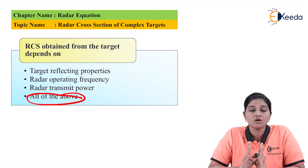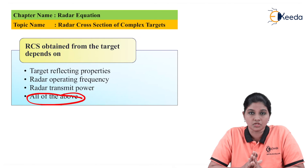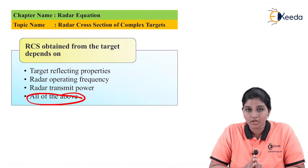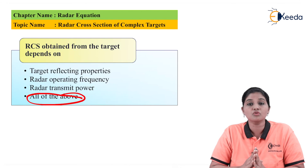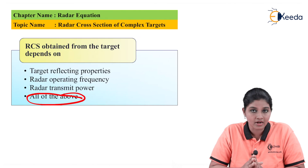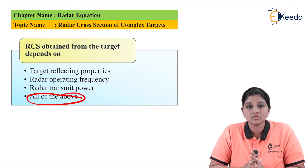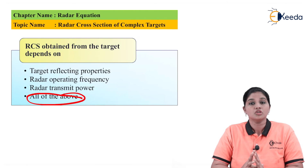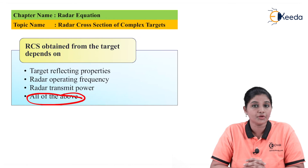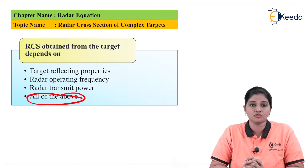This is how we can find out the RCS for a complex object. To summarize: to find out the RCS of a complex object, it is always important to divide the complex object into smaller objects having a standard RCS. After finding out the individual RCS values, they are all combined together to find out the RCS of the complex object. I hope you understand this topic. Thank you very much for watching this video. Stay tuned to Ikira. Subscribe Ikira. Thank you.